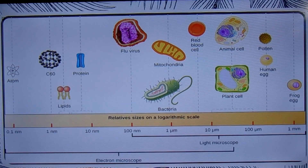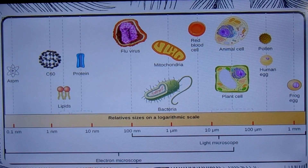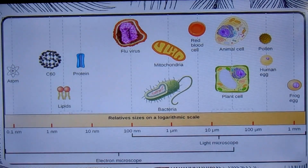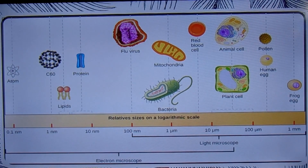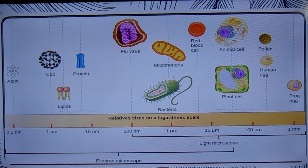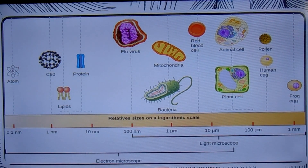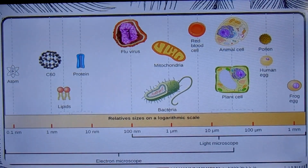Cells are also enormously diverse in their chemical requirements. Some require oxygen to live; for others, this gas is deadly. Some cells consume air, sunlight, and water as their raw materials; others need a complex mixture of molecules produced by other cells. These differences in size, shape, and chemical requirements often reflect differences in cell function.